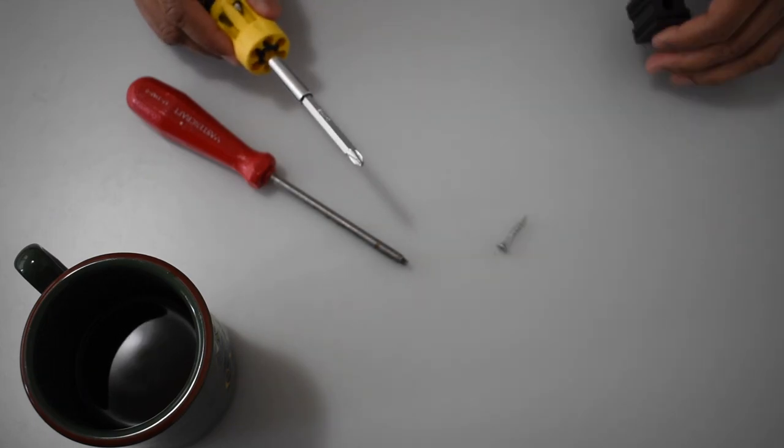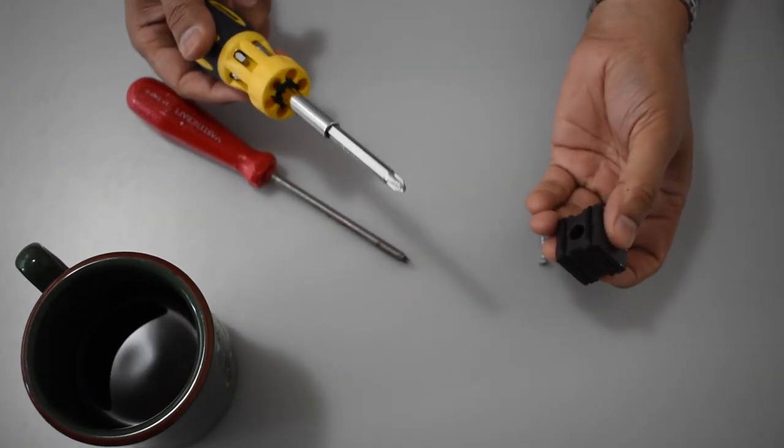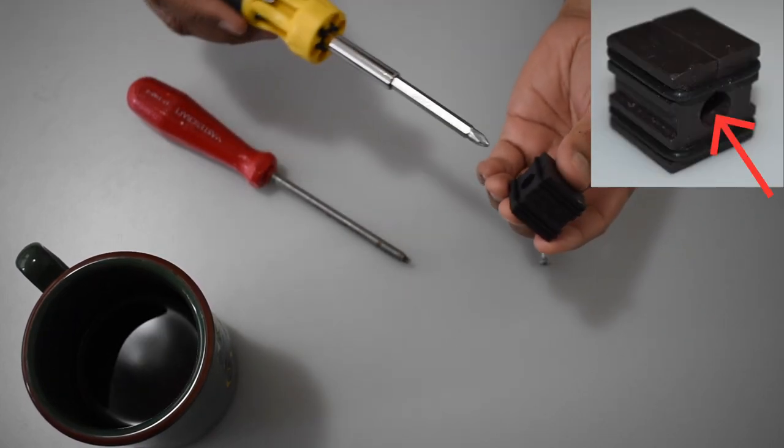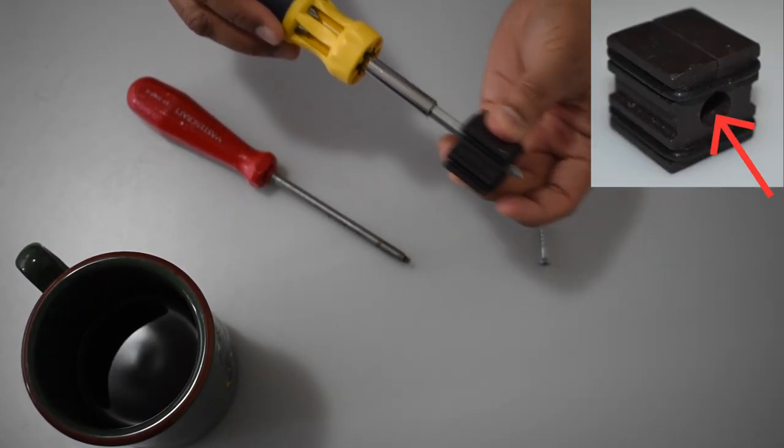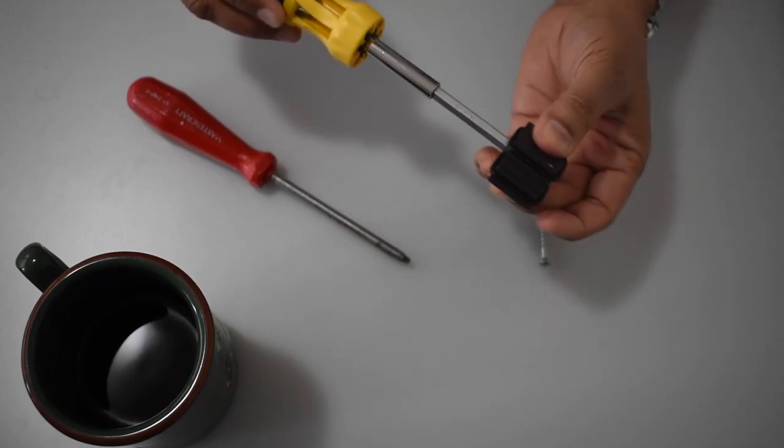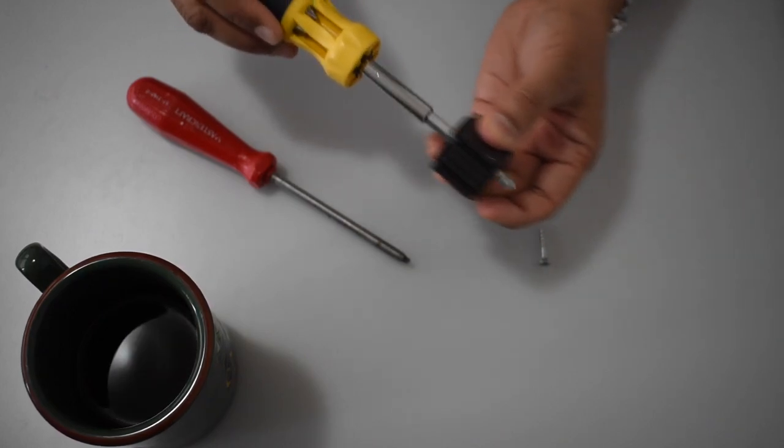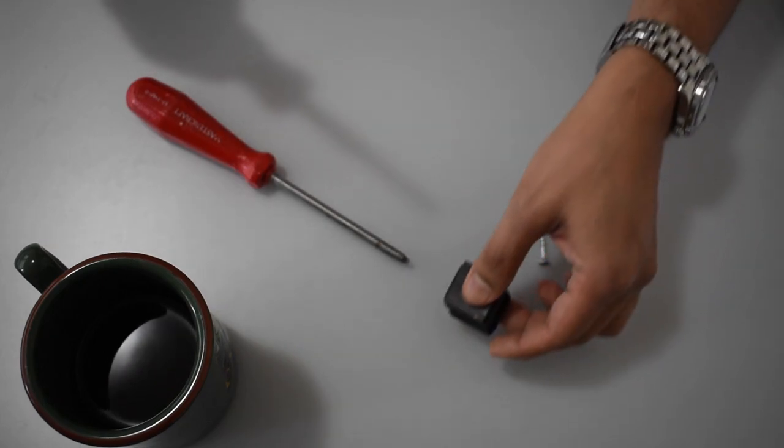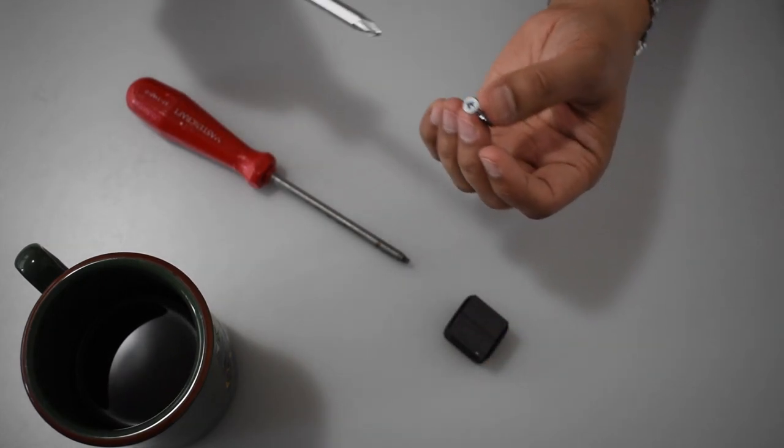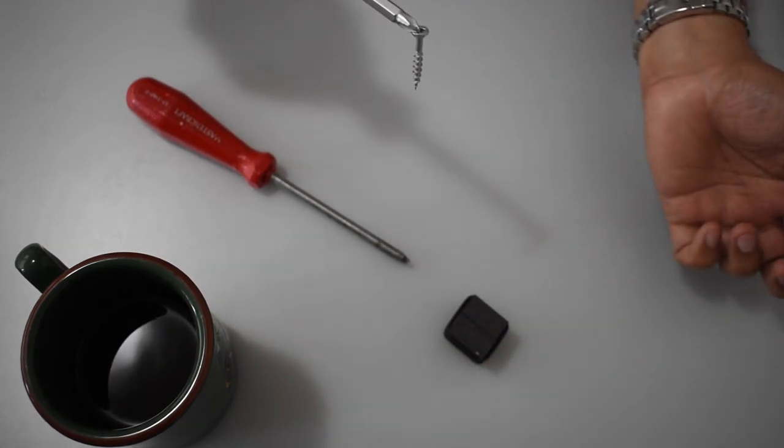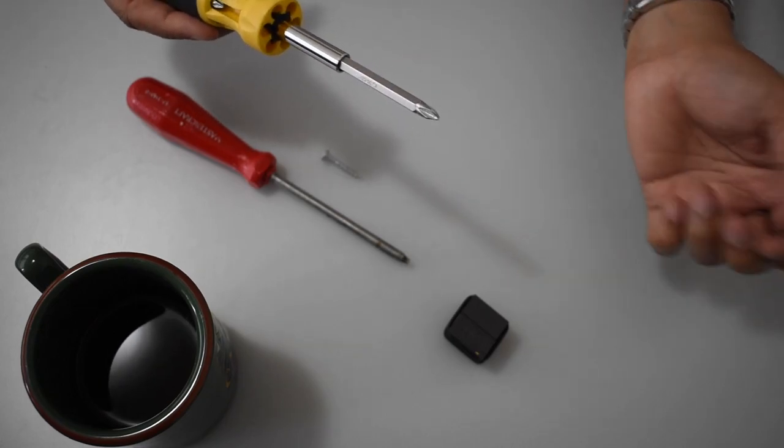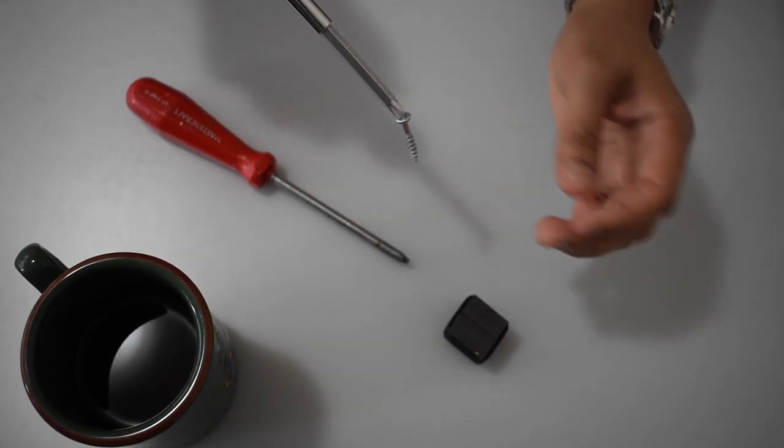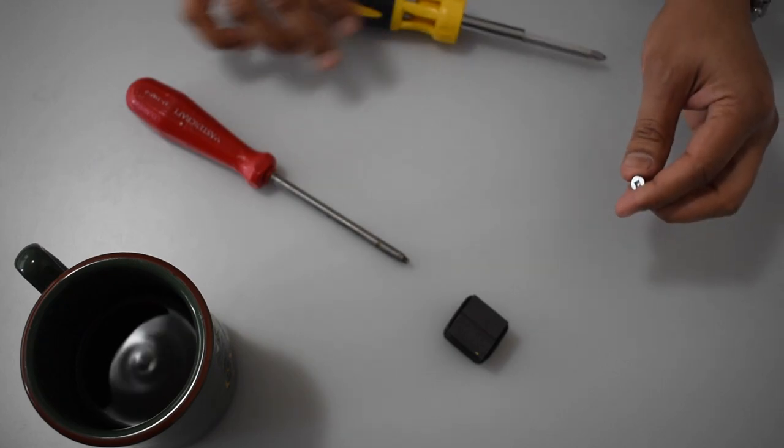Now watch what we can do. Whatever screwdriver you have that is non-magnetized, you simply run it through a few times in and out of the magnetizer. Once you've done that, you'll notice that all of a sudden the screwdriver is now magnetized. Let's try that again.